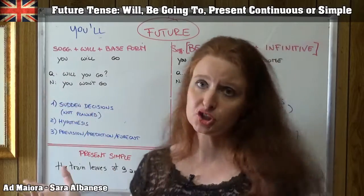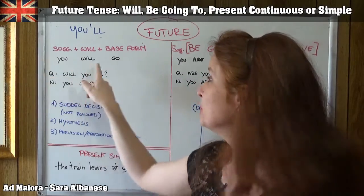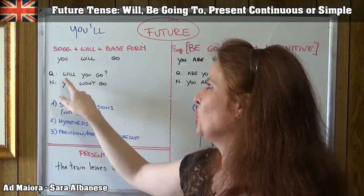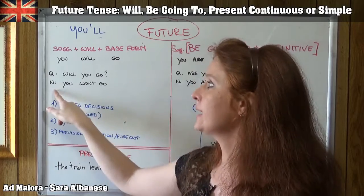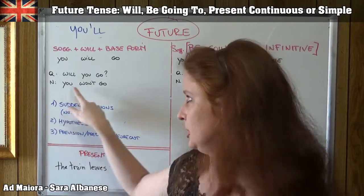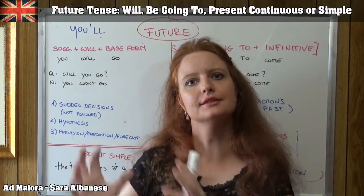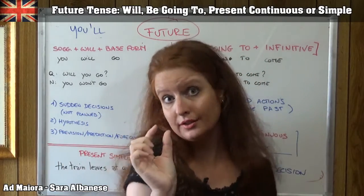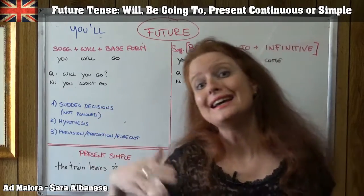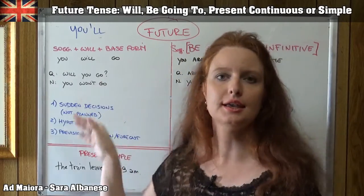What about the interrogative and negative forms? For the question we simply put 'will' before the subject as usual — 'Will you go?' For the negative form, 'will' stays after the subject and becomes 'won't', which is a contraction of 'will' and 'not'. Pay attention to the spelling: W-O-N-T, because the 'o' from 'not' is dropped in the contraction.